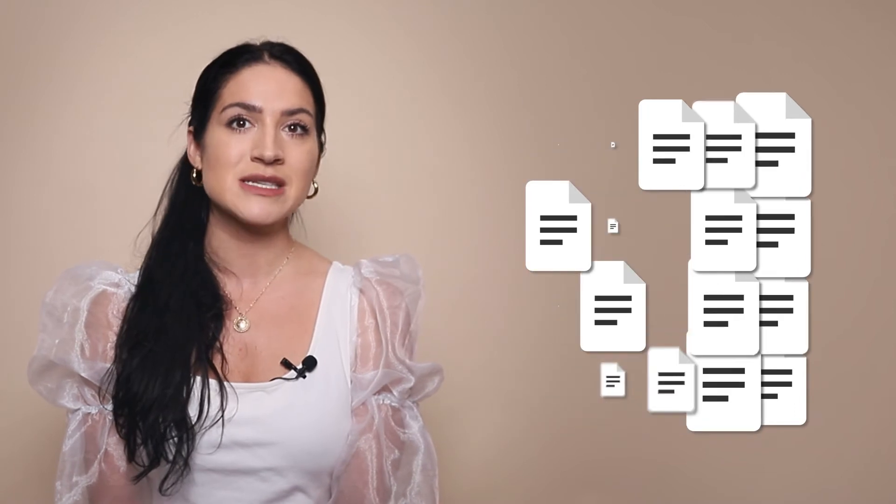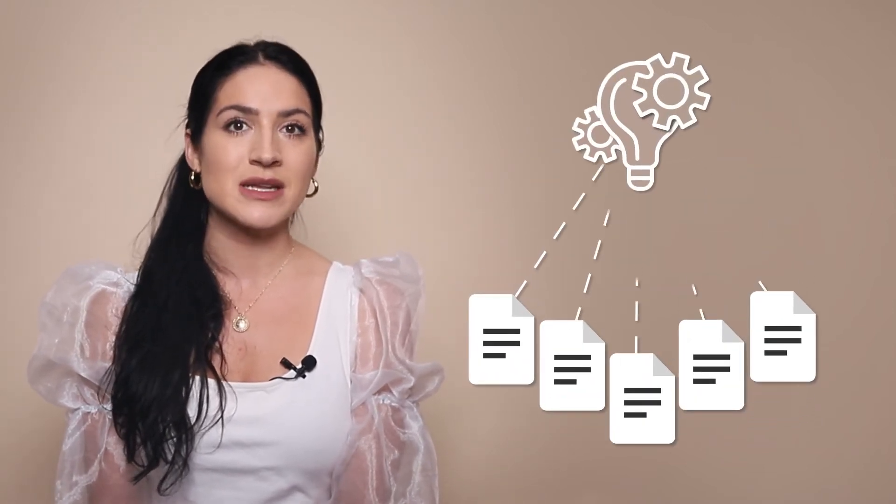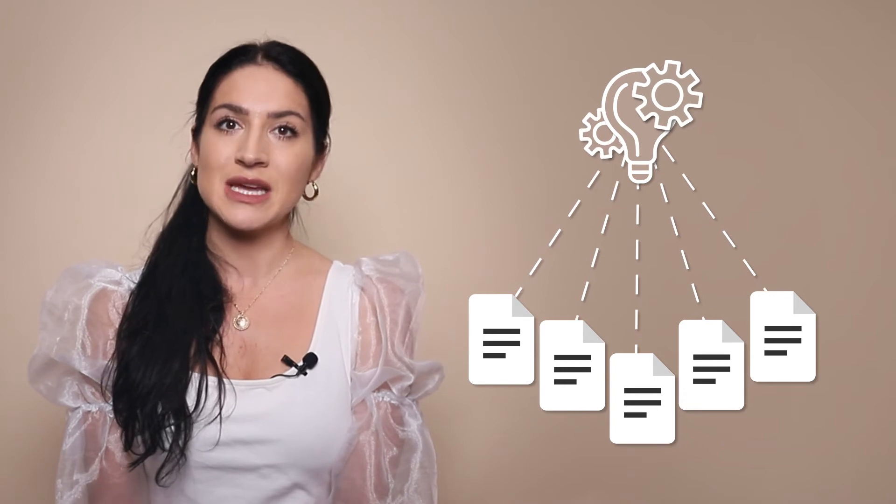After applications close after two weeks, narrow down all the applications you received to three to five applicants, and have those three to five applicants complete a small project that should take them no more than one or two hours. Make sure this project is very specific to what their role will entail. For example, if I were hiring a social media strategist, I might ask them to build out a sample content calendar for one week, or if I were hiring a ghostwriter for my blog, I would have them write a sample blog post.